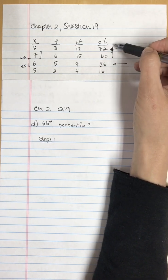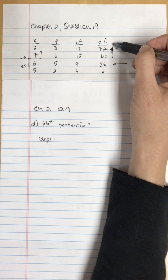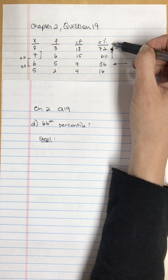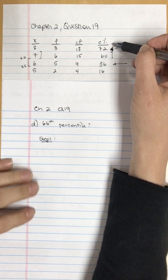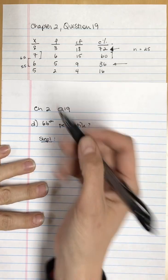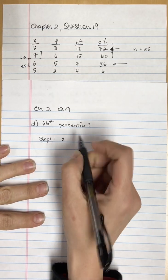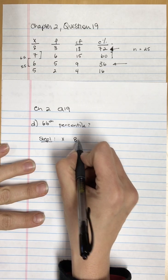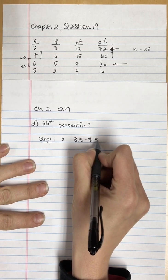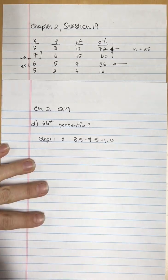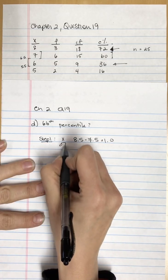And 8.5 is associated with the 72nd percentile, and 72 is more than 66. So for the width on x, I take 8.5 minus 7.5, and that equals 1. I do the same for the percentiles.